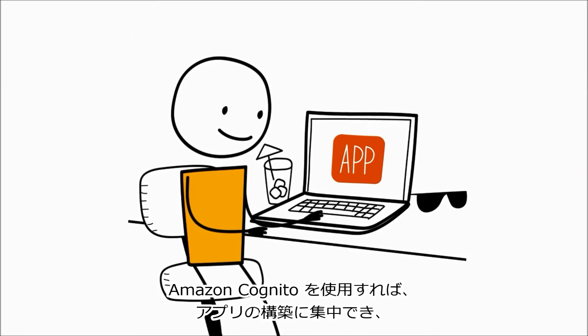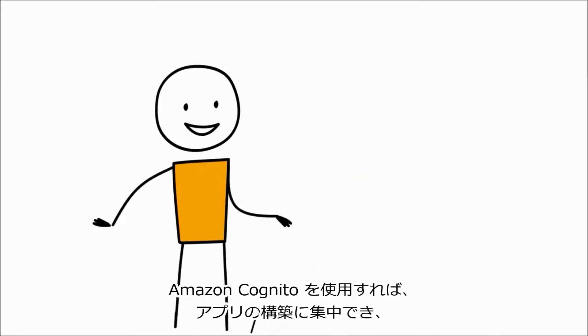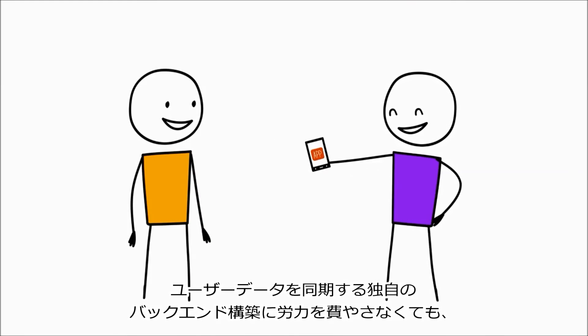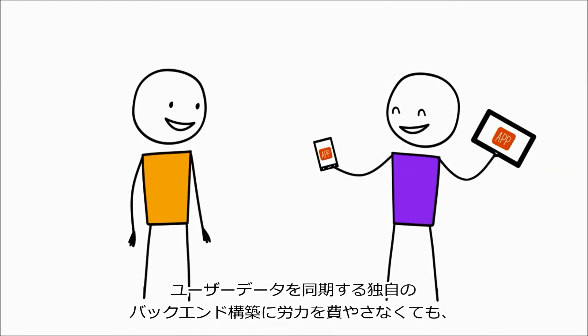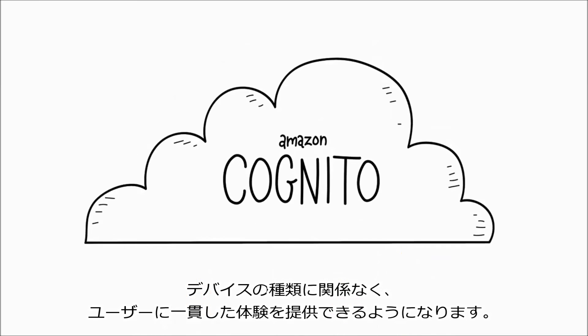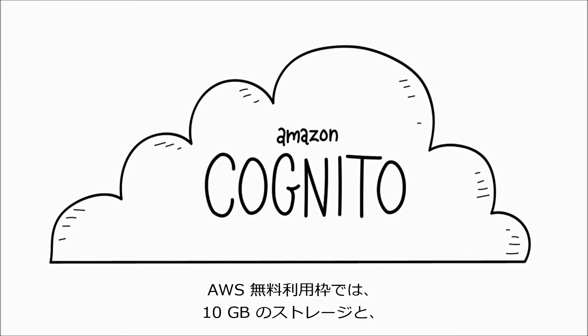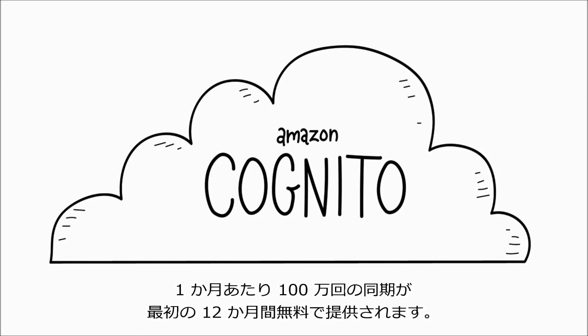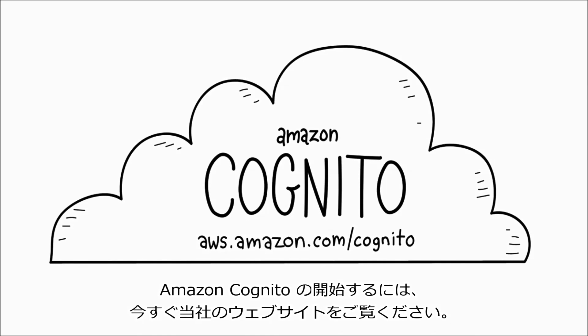Amazon Cognito lets you focus on building your app and making sure that your users have a consistent experience regardless of the device they're using, without you having to worry about the heavy lifting associated with building your own back-end solution to sync user data. With the AWS free tier, you'll get 10 gigabytes of storage and 1 million syncs per month for free for your first 12 months. To get started with Amazon Cognito, visit our website today.